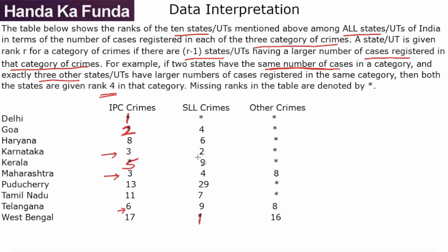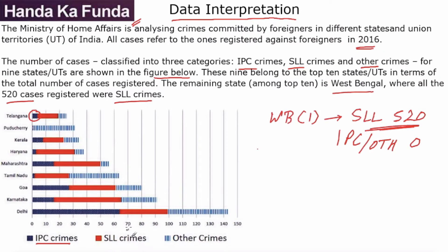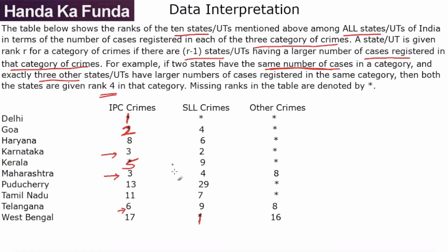Since I have rank 2 and rank 4, someone must be rank 3. Checking the data for Delhi: in SLL, Delhi is around 32 or 33. Karnataka is a lot bigger than that. Goa is also around 32 or 33, and Maharashtra is also around 32 or 33 — maybe all three are tied. But the table shows Maharashtra is rank 4 and Goa is rank 4, meaning 3 states are distinctly above them. West Bengal is rank 1, Karnataka is rank 2, so Delhi must be rank 3 in SLL.